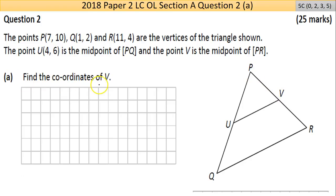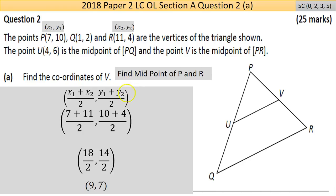Now part A says find the coordinates of V. If we read it from the question, V is the midpoint of PR, so we're concerned with basically finding the midpoint of PR. As always, you should go find your formula—it's in the math tables.